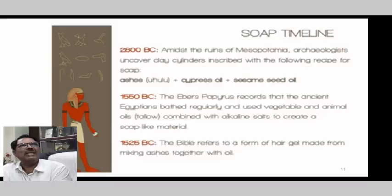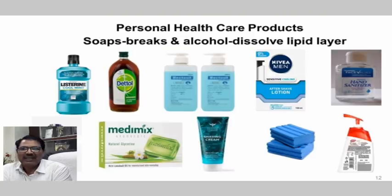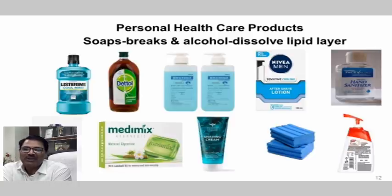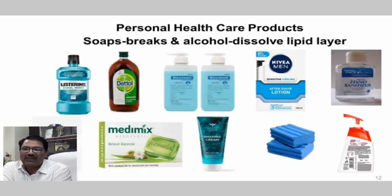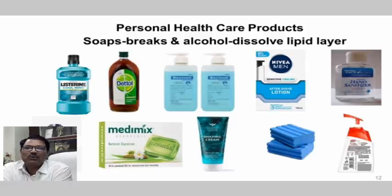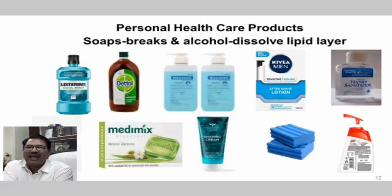Here you can see various products — these are chemical products brought to market under various brand names. I am not going to advertise these things, but I am telling you about how they are used and how they keep the coronavirus away. Various materials are used in home personal health care products. Two key things are soap and alcohol. Soap breaks the lipid layer and alcohol dissolves the lipid layer — the outer part of the coronavirus envelope.